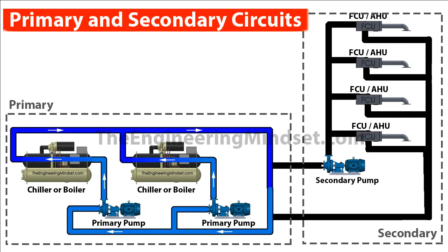Coming back to the primary circuit — this is where the chilled water or heated water is produced. The primary pumps are usually constant volume, but more modern systems may have variable speed drives on these pumps for energy efficiency purposes. However, there is a minimum flow rate that these variable speed pumps must meet.